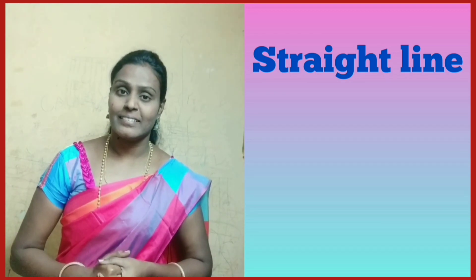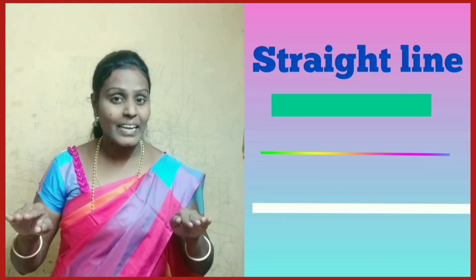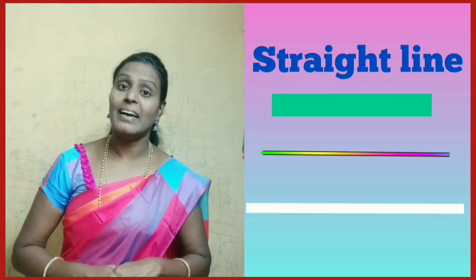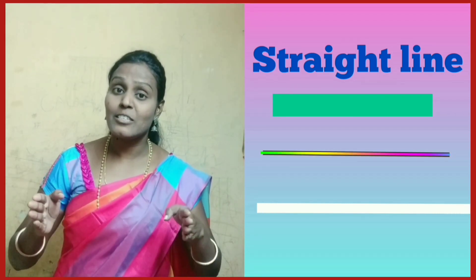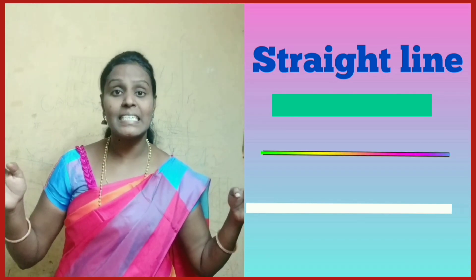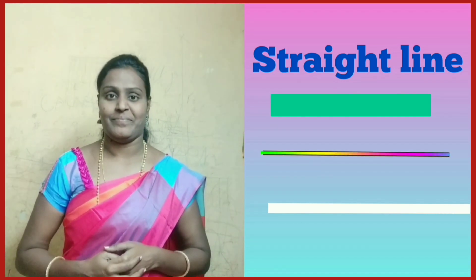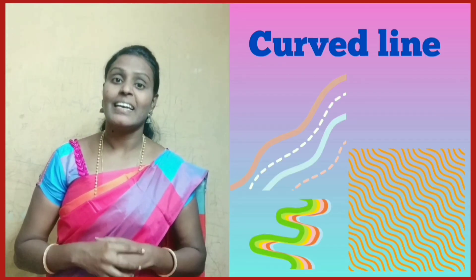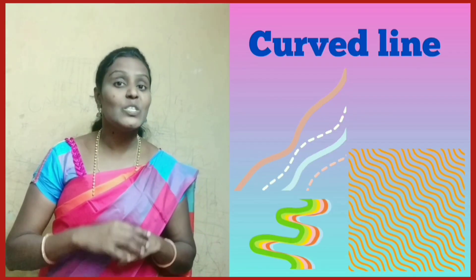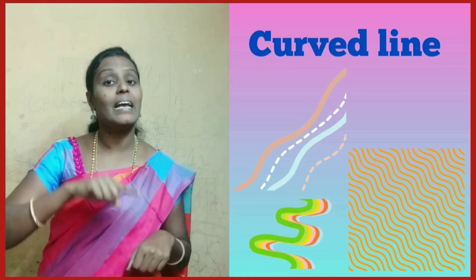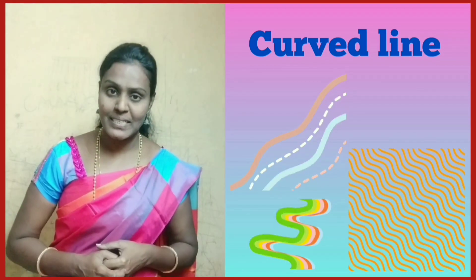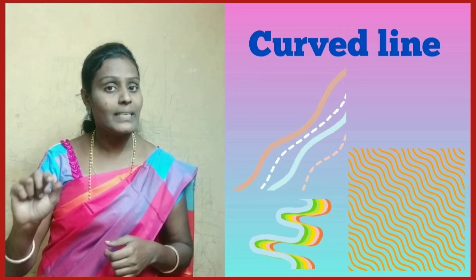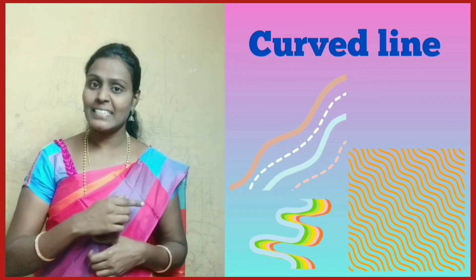A straight line is just a line with no curves, which means a line that extends both sides to infinity. A line that is not straight is a curved line, which means a point does not move in one direction.